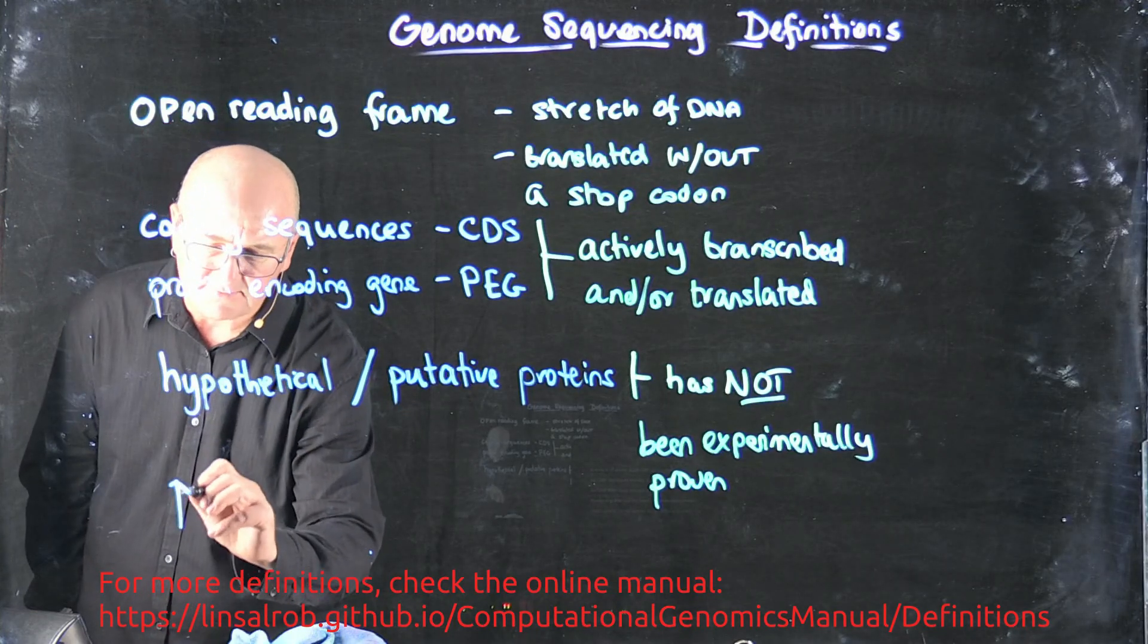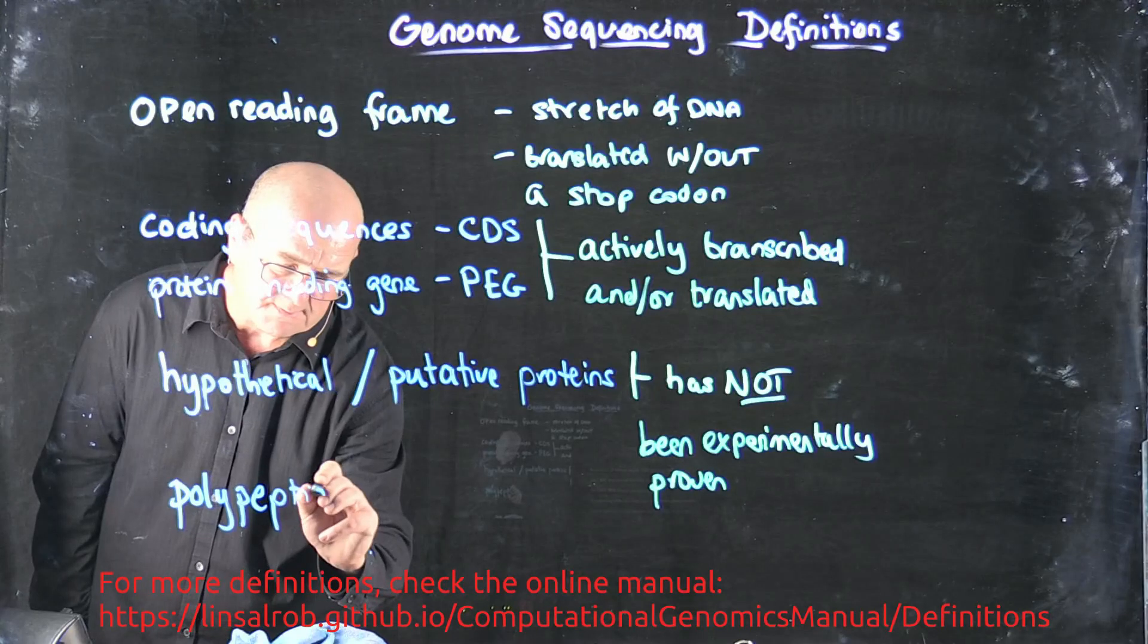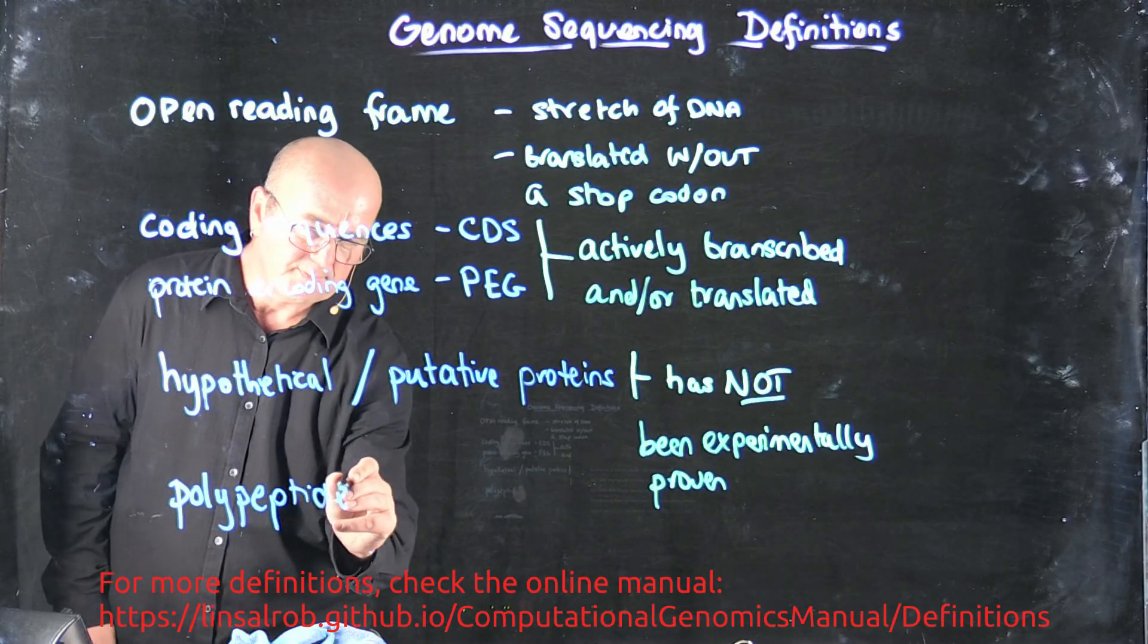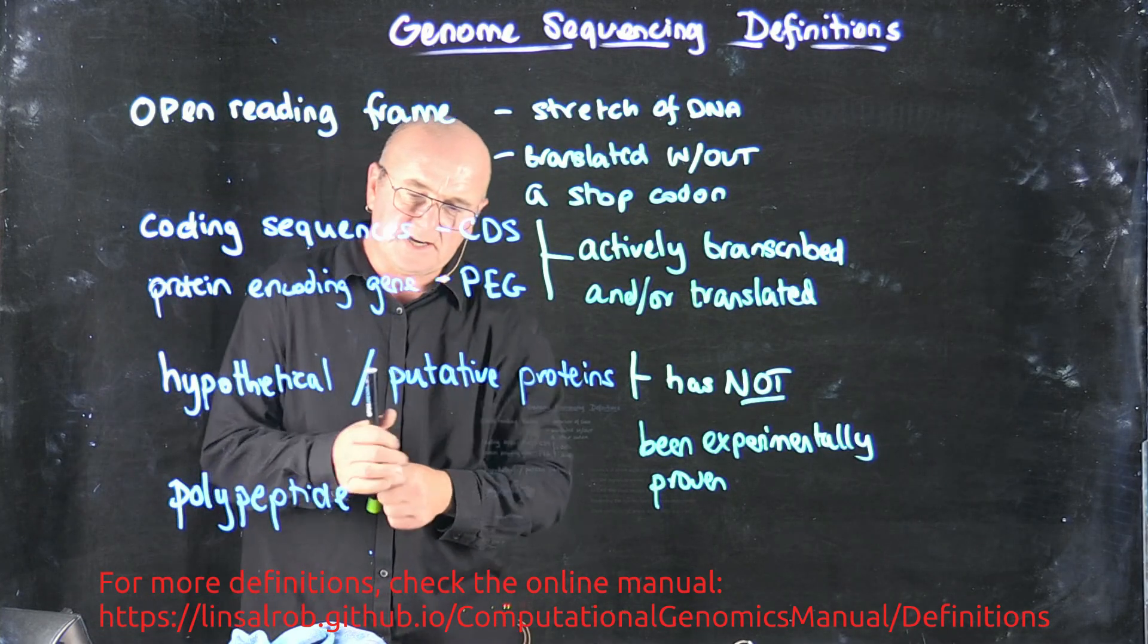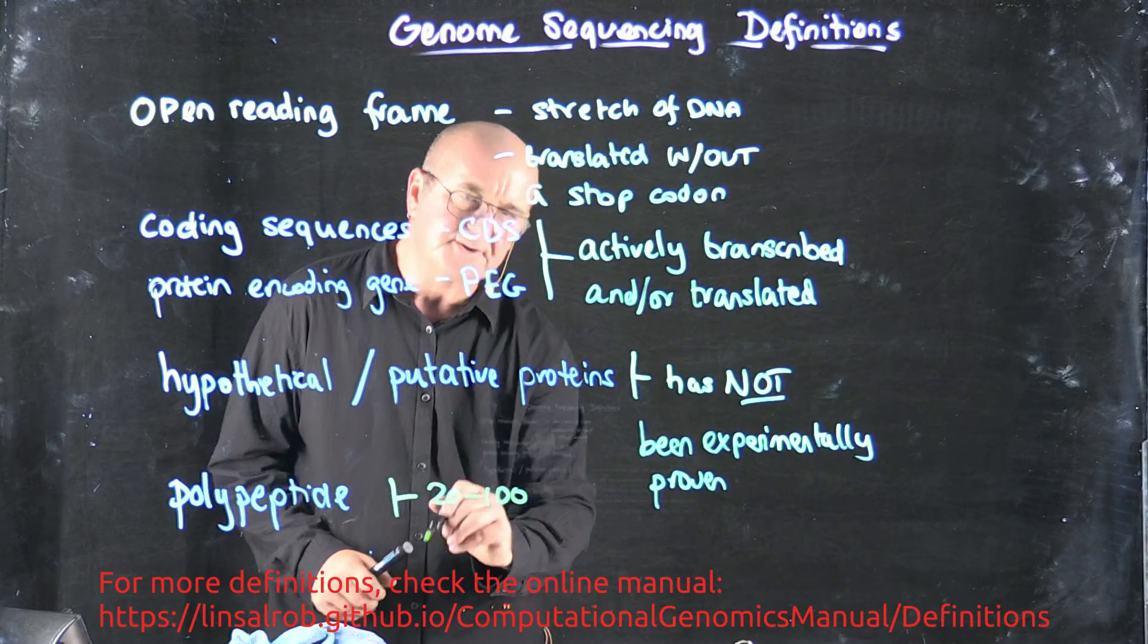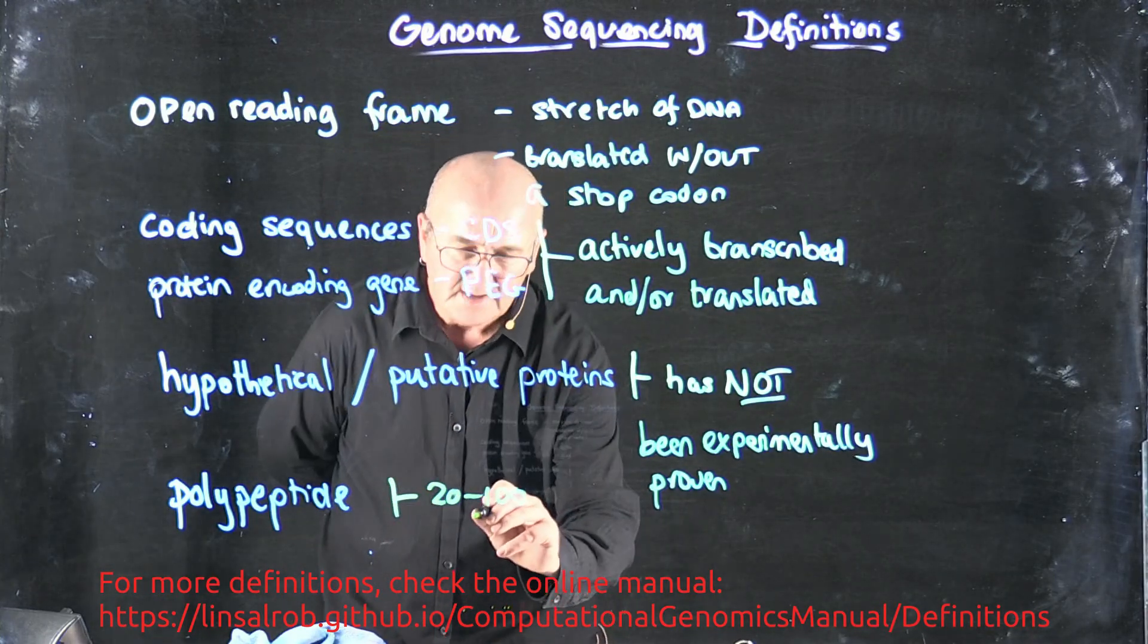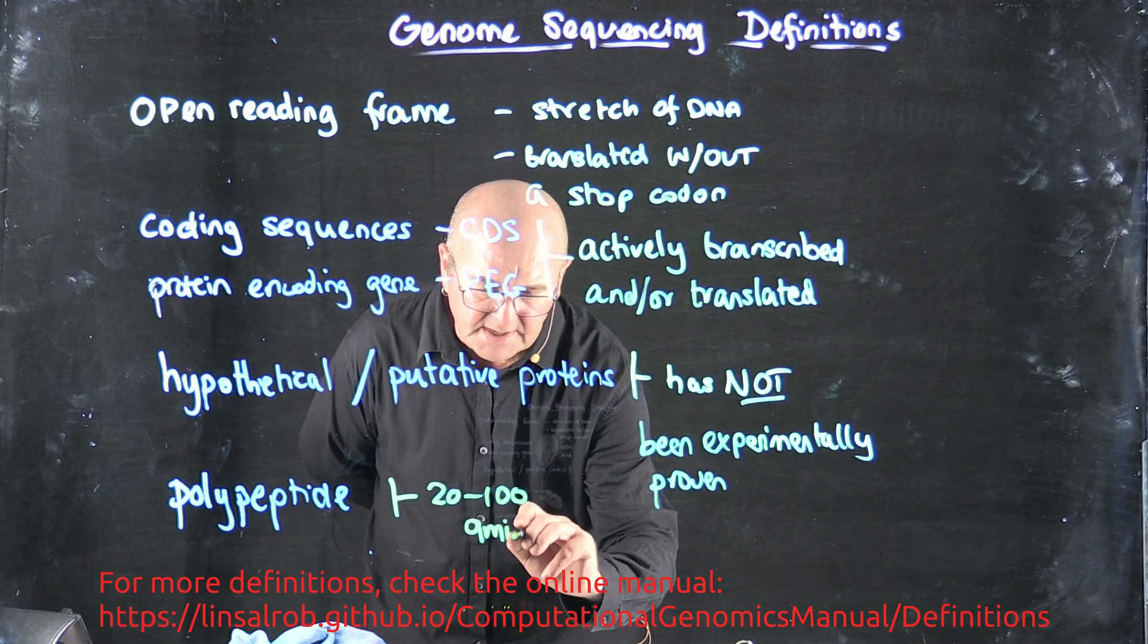And then the last one that comes up frequently that I just want to mention is polypeptide. And a polypeptide is a stretch of somewhere typically between 20 and 100, but this is really, there's no hard and fast rule here, of consecutive amino acids.